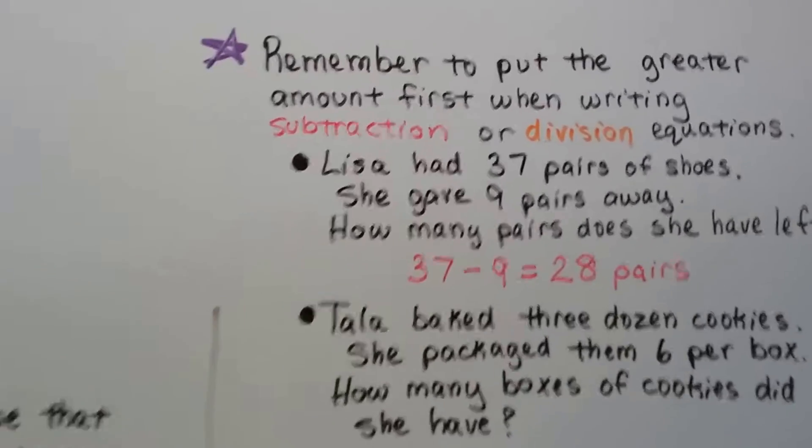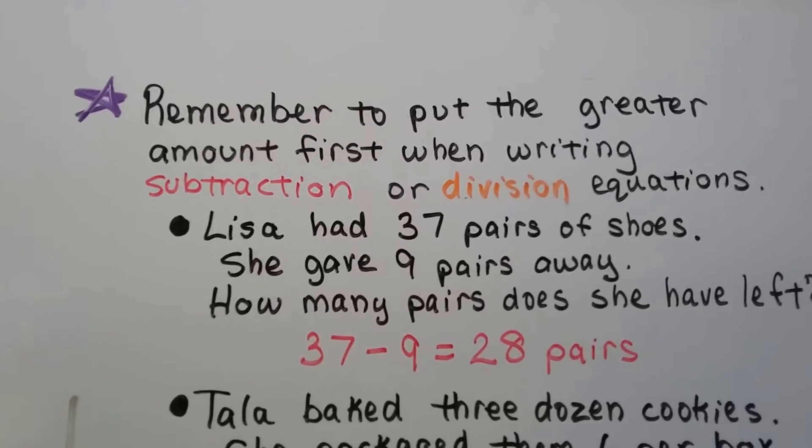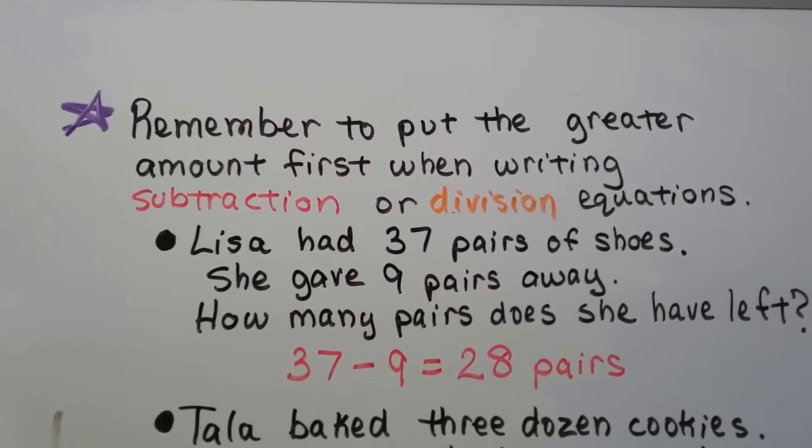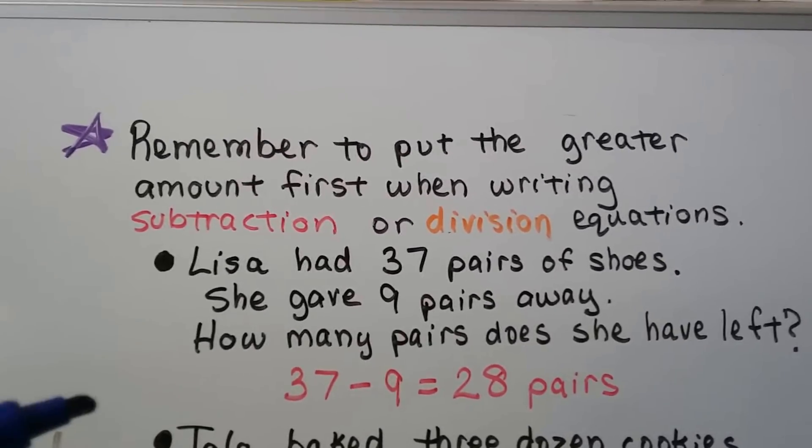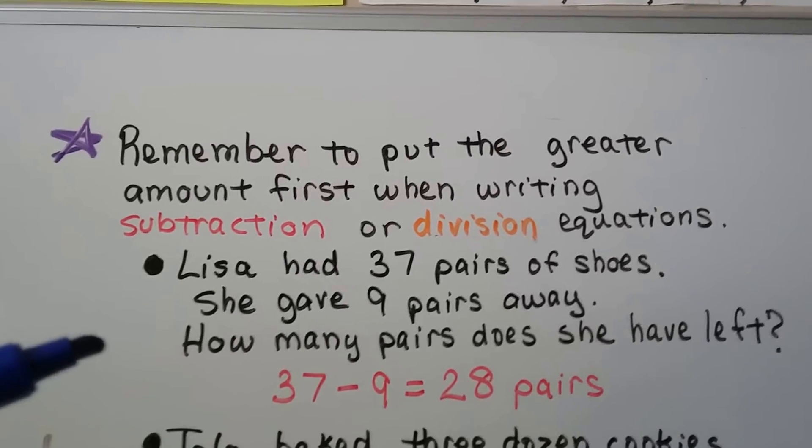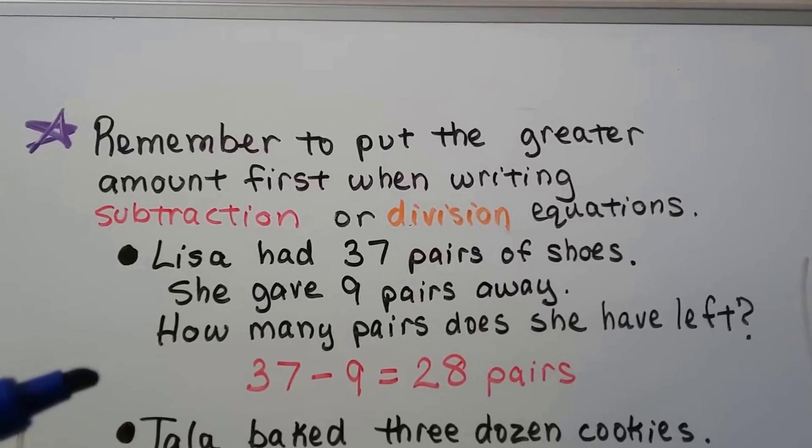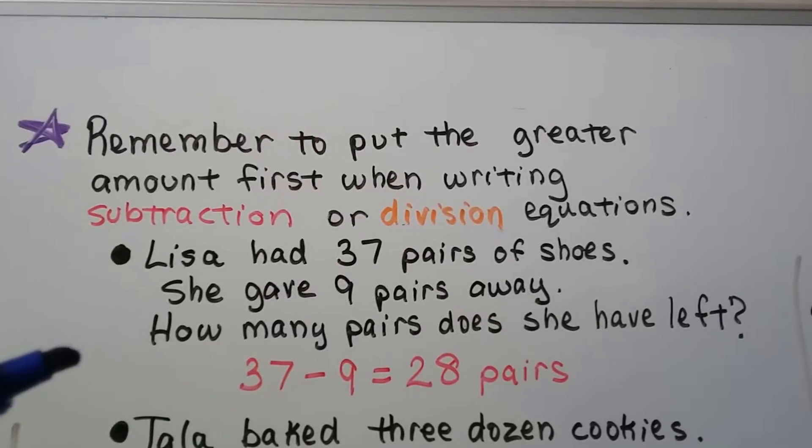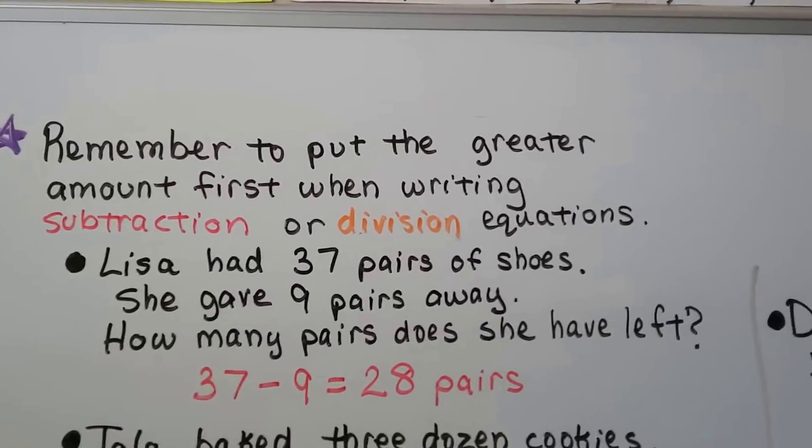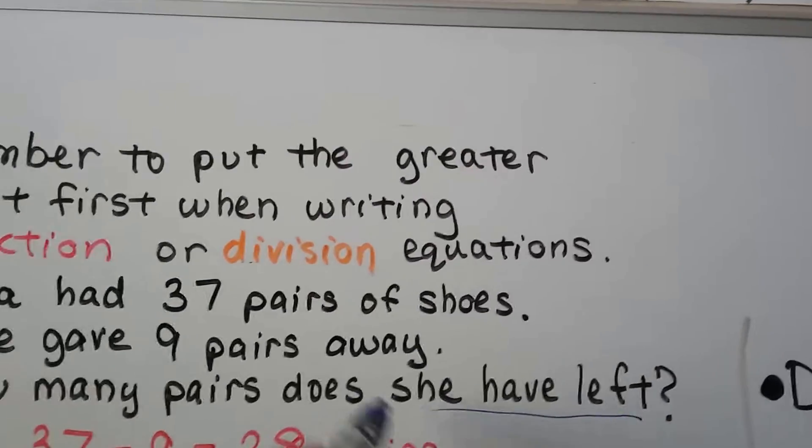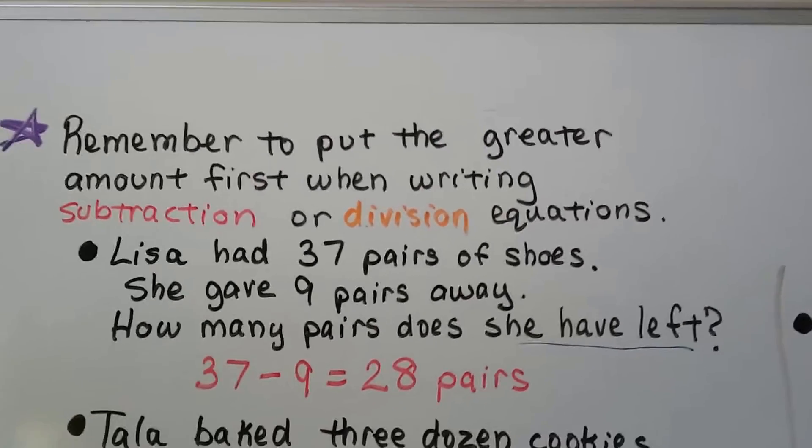You need to remember to put the greater amount first when you're writing subtraction or division equations. In this example, Lisa had 37 pairs of shoes and she gave nine pairs away. How many pairs does she have left? We see the word 'left'—we know that's a clue word for subtraction.